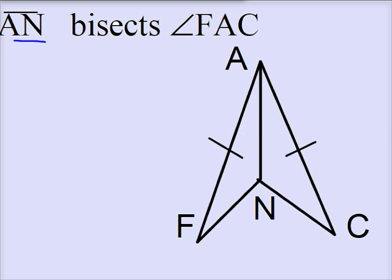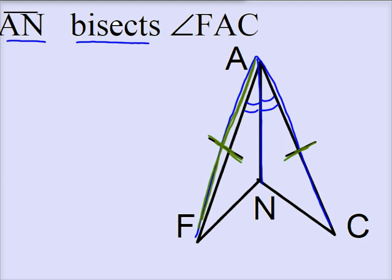I see AN bisects angle FAC. Well here's angle FAC, and AN cuts it in half. And so that means that these angles will be congruent. Furthermore, we've got these congruence marks, and so that means segment FA and segment CA are congruent.